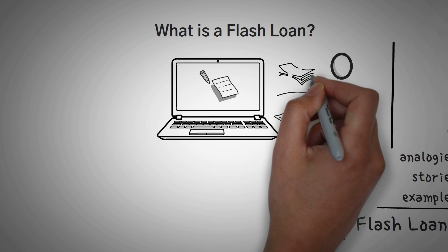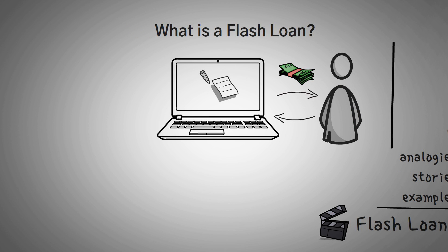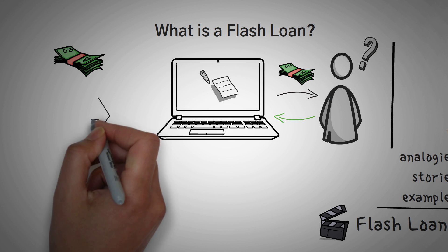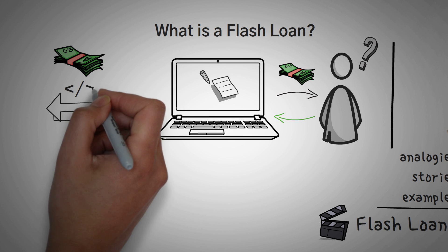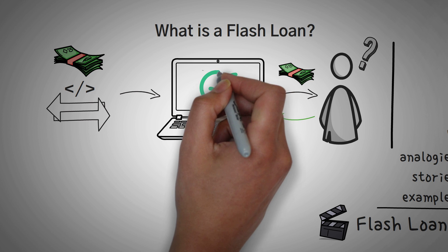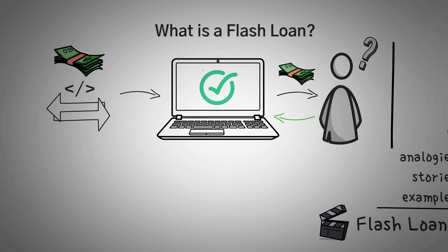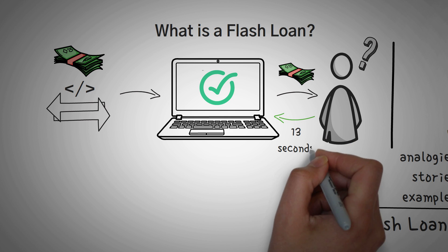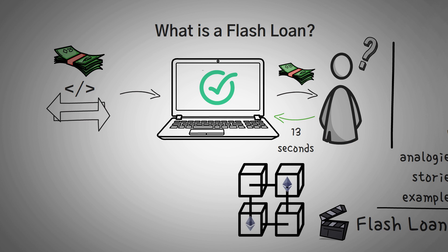A flash loan is simply a loan where you can borrow massive amounts of money for free, but you must pay it back almost immediately. You can borrow some money, do some transactions with it using code that you wrote, and have a computer check if by the end of all those transactions you will actually have enough money to pay it back. When I say a short period of time, I mean like 13 seconds, because that's about how long an Ethereum block takes to be validated.